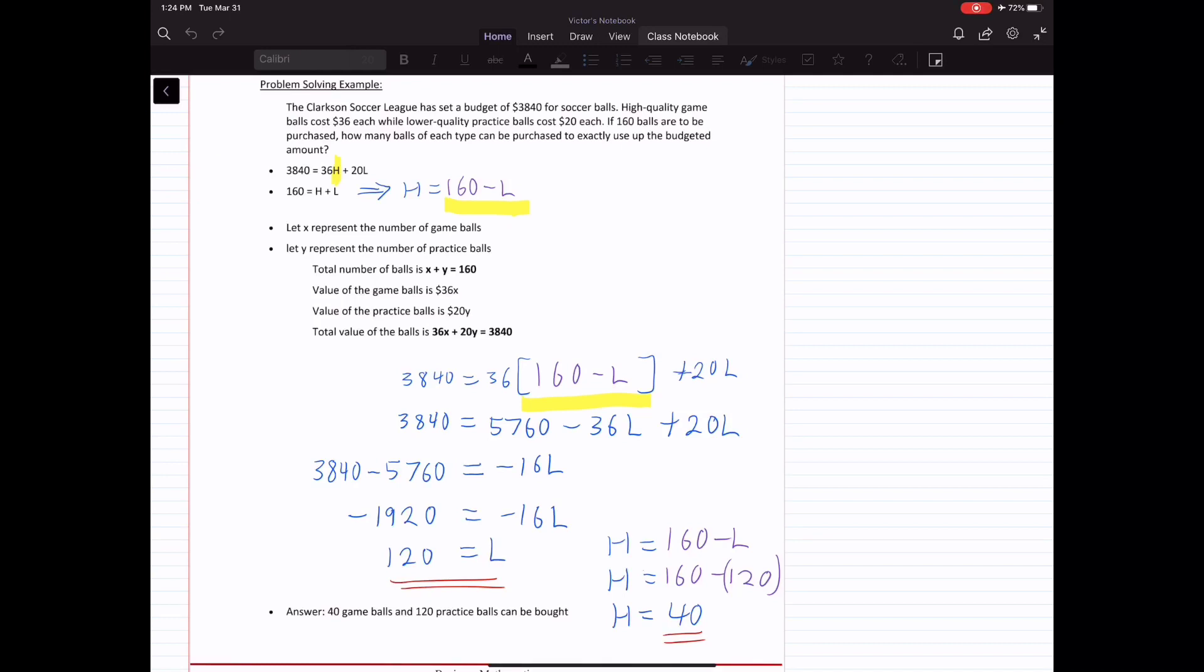Once we have the two equations and we have two unknowns, we can solve for H and L by substitution. So H equals 160 minus L. We substitute that into the 3840 equation. So we have 3840 equals 36 times bracket 160 minus L, close the bracket, plus 20L. And then we expand the bracket.